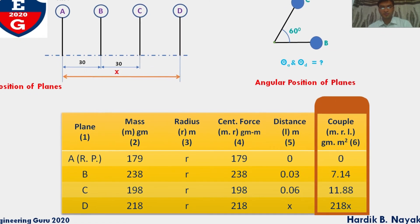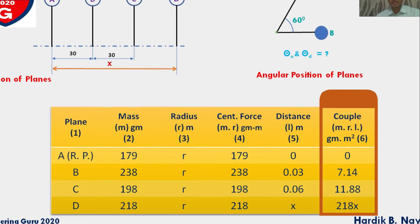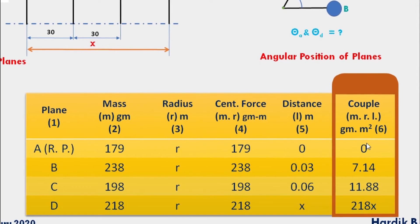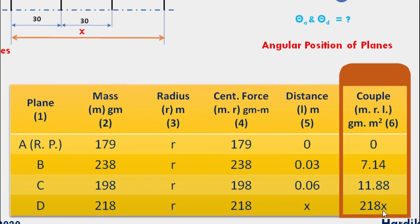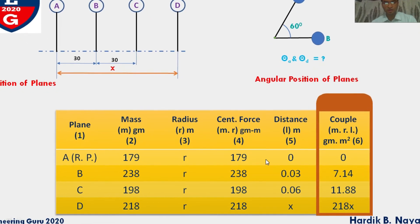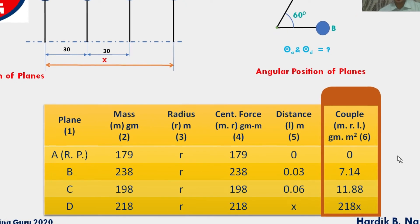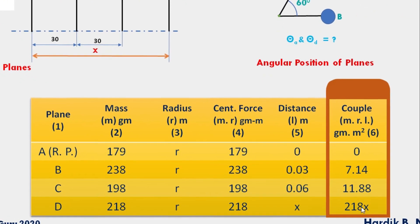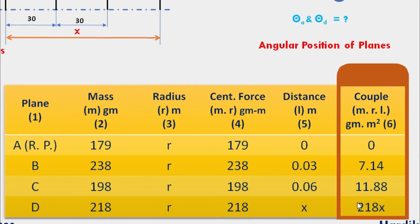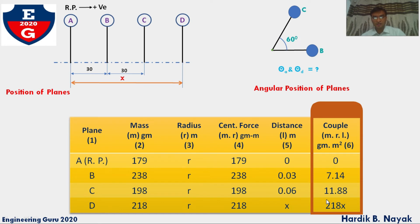So 179 into 0 equals 0. 238 into 0.03 equals 7.14. For plane C, 198 into 0.06 equals 11.88. And finally, 218 into X equals 218X. Now two columns we need to look at: column 4 and column 6. From the couple diagram, we will find out the value of X, that is total distance, and angle of plane D. Using that, we will draw force polygon and find out the angular position of mass A.